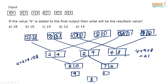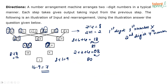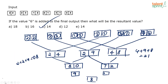So 8 will be the final answer. The first question is: if the value of 6 is added to the final output, what will be the resultant value? Your final output was 8. If you add 6 to 8, you get 14. The answer is C. That is the question on machine input-output. Practice these steps and see these kinds of questions often so that when it comes in the exam, you will be able to crack them.